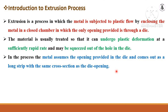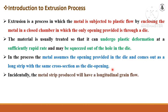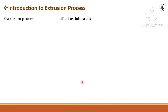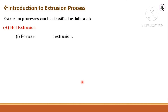In case of the cold extrusion process, there will be different kinds of shapes and complexity of the job, and accordingly we have divided the process into hot extrusion and cold extrusion. The metal strip produced in the extrusion process will have a longitudinal grain flow. Extrusion is divided into hot extrusion and cold extrusion process.